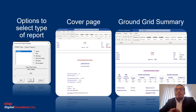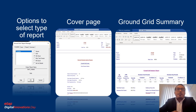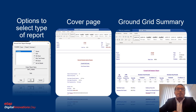ETAP also gave us the option to print a report with the study results. We can choose to view it in a viewer, as PDF, or in Word, which lets us add logos and other related information. In the cover page of the report, we have general information about the ground grid system, such as the total number of rods and the amount of wire involved. The report also has a summary section showing the ground resistance in ohms, the ground potential rise, and the maximum touch and step potentials of the ground grid system.